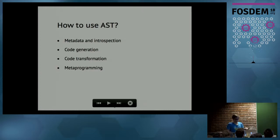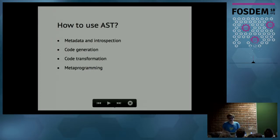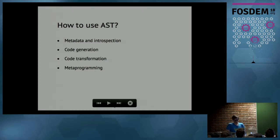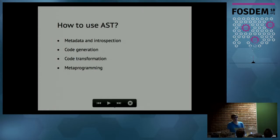For example, you have Clippy, which shows you many issues in your Rust code. It would be very nice if it could also do automatic transformation and automatic refactoring of your code — and that's what you can do with AST. With AST, you have full information about your code and you can generate new code out of ASTs. There's also the metaprogramming aspect, basically related to macros, which are very similar to how ASTs work.